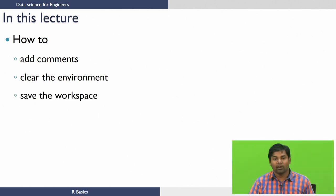Welcome to lecture 2 in the R module of the course Data Science for Engineers. In the previous lecture we gave a brief introduction about R and R studio, and we saw how to create an R file, write some codes in the R file, and how to execute an R file. In this lecture we're going to show how to add comments to the R file, how to clear the environment, and how to save the workspace of R.